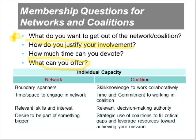For example, if you're looking at individual capacity for a network, you're likely looking for members who can be boundary spanners — able to operate across different environmental contexts and disciplines. Whereas within a coalition, boundary spanning isn't as important as the skills to work collaboratively and a willingness to come to the table with a common agenda. So at the first level, member capacity is enshrined in those four questions: what do you want to get out of it, how do you justify your involvement, how much time can you devote, and what can you offer.